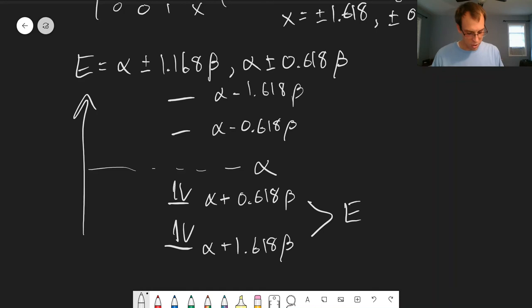This is the conjugation that we're seeing that's showing up in the quantum mechanics here. So our energy is 4 alpha plus 4.472 beta, and this is the amount we stabilize.